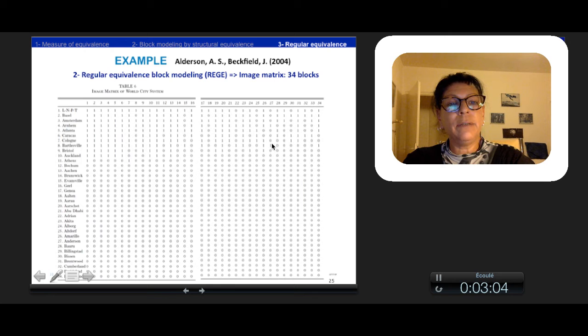According to the regular equivalence of all the cities and with an alpha density criterion, they create a regular equivalence block modeling, and so the image matrix contains 34 blocks that are there. The names of the blocks are the first cities according to alphabetic order in each block.